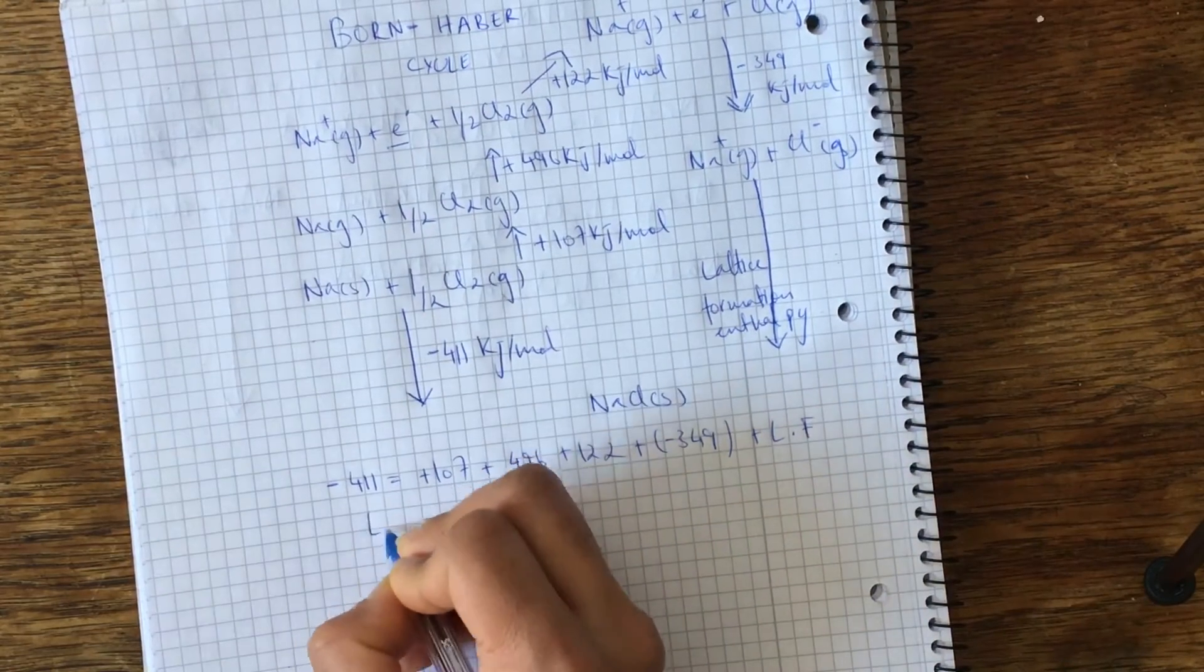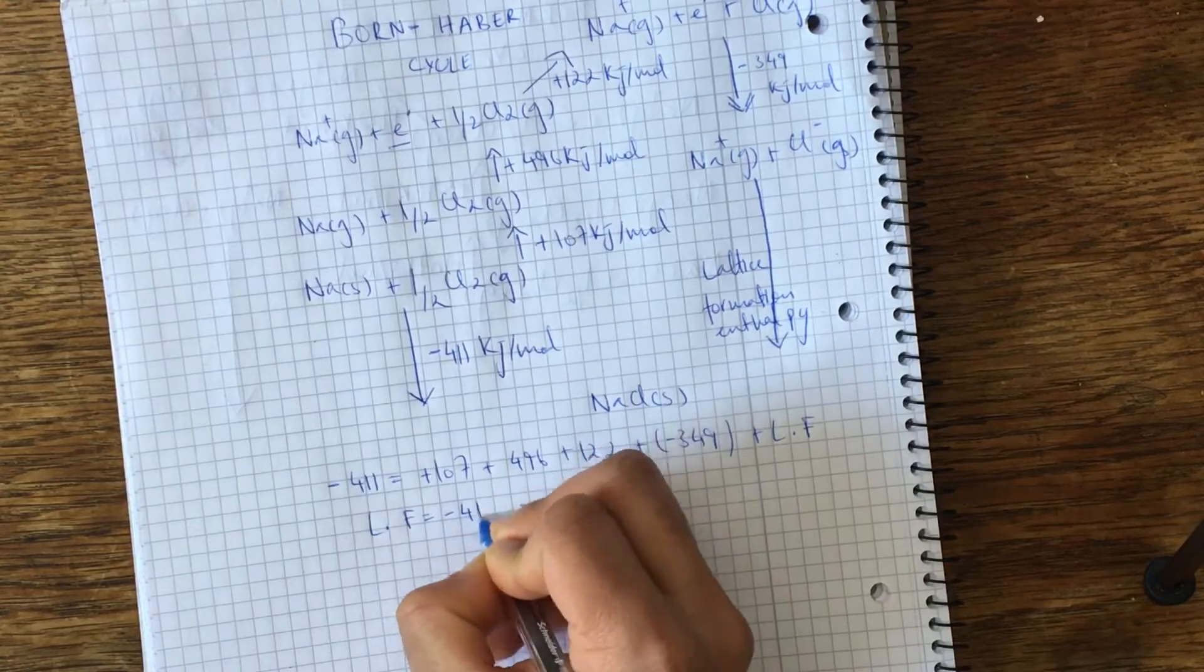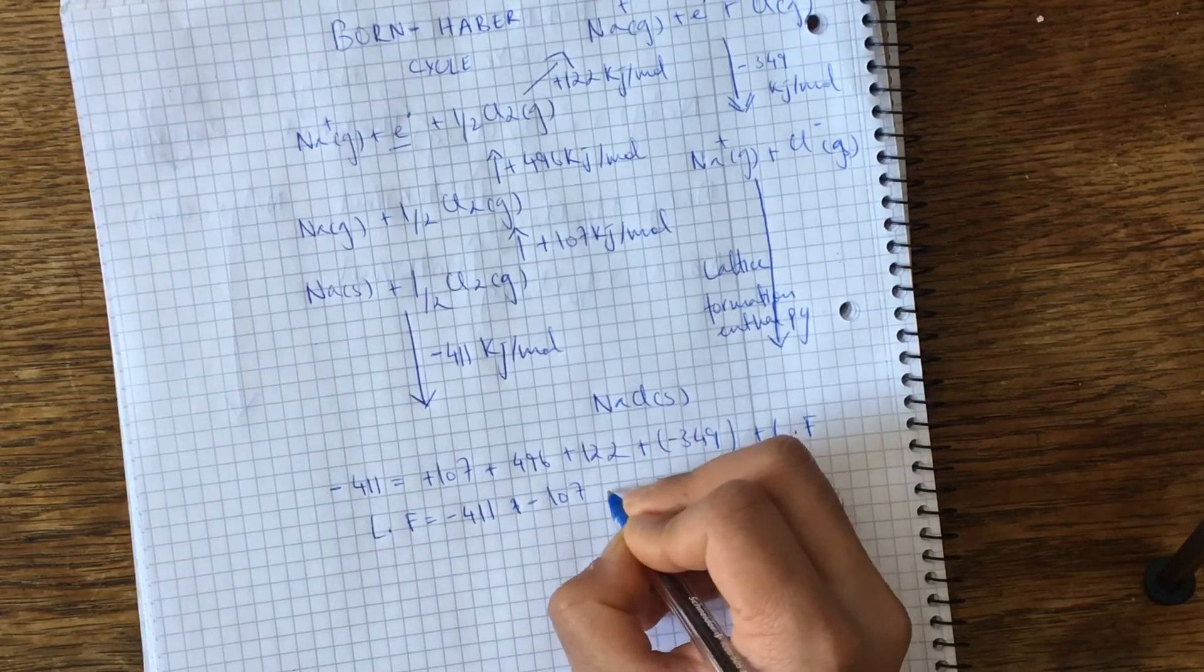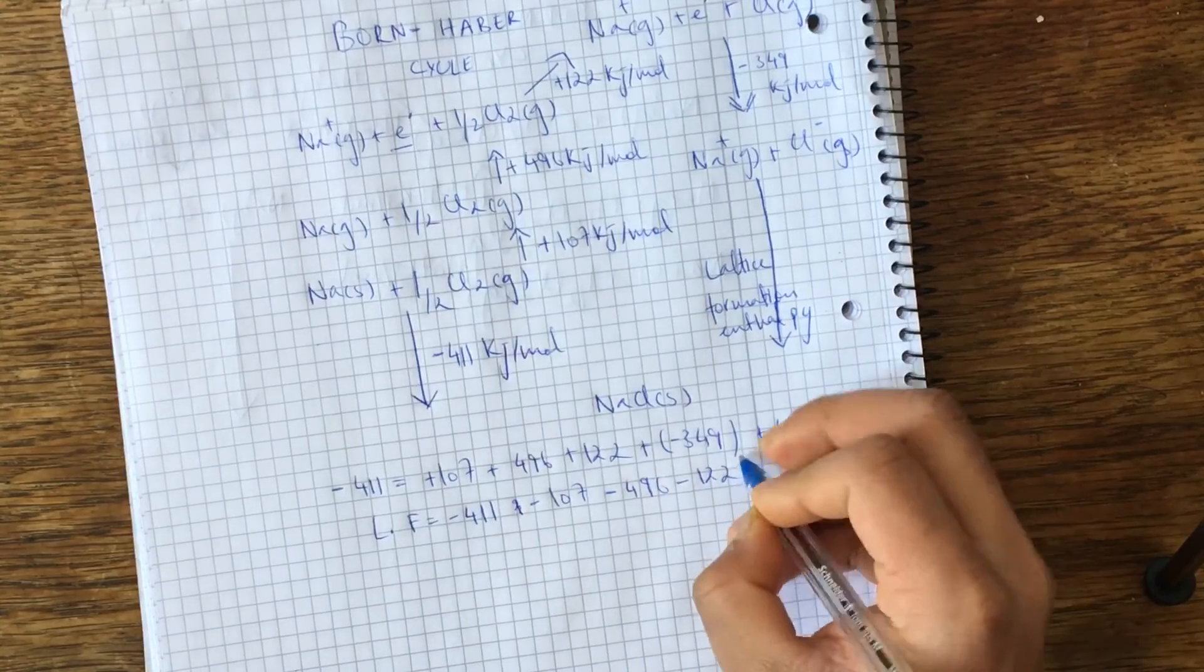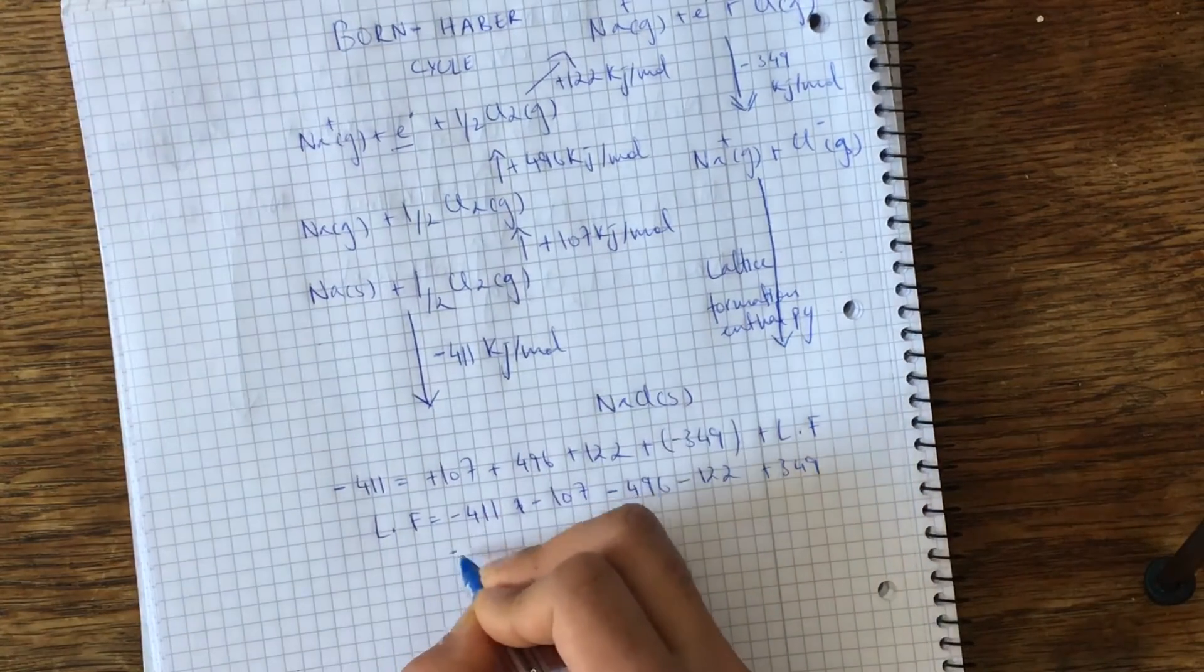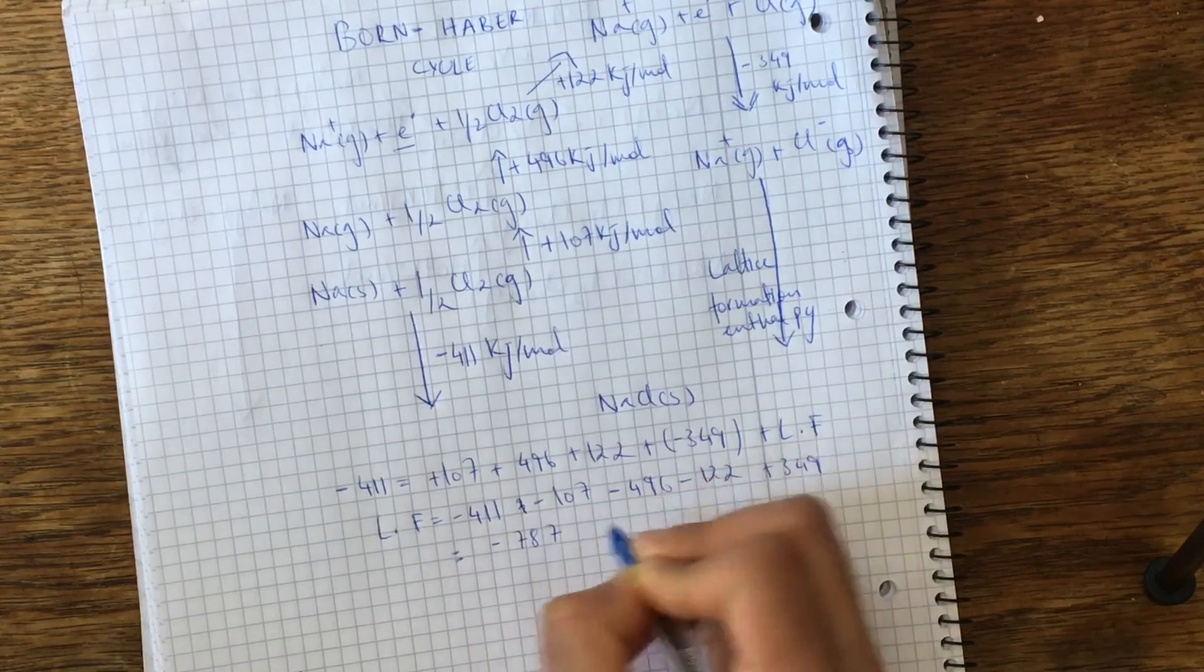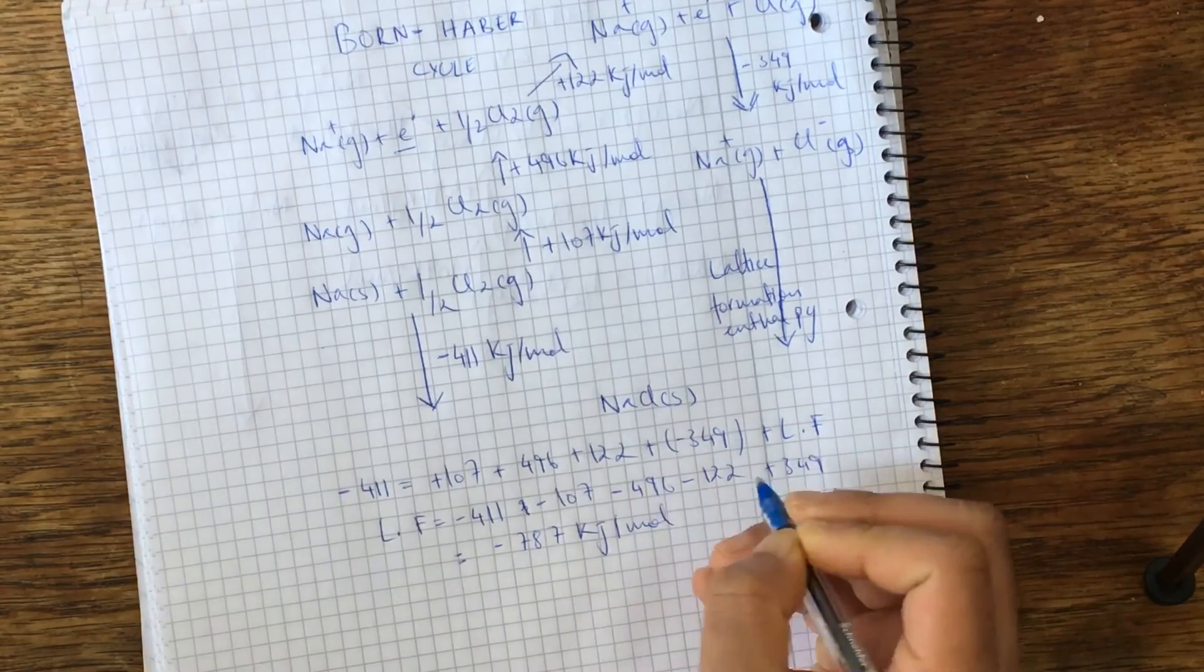And just bring this over to the other side, and just have to subtract all these energies now: 496, 122, and plus 349. And at the end of it, you get minus 787 kilojoules per mole.